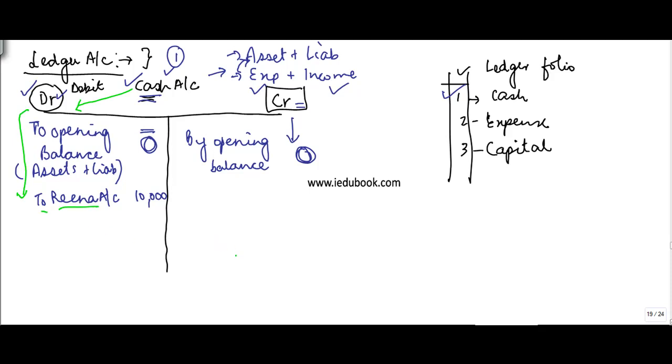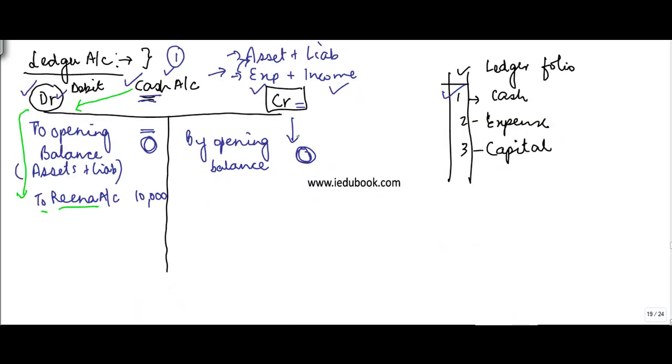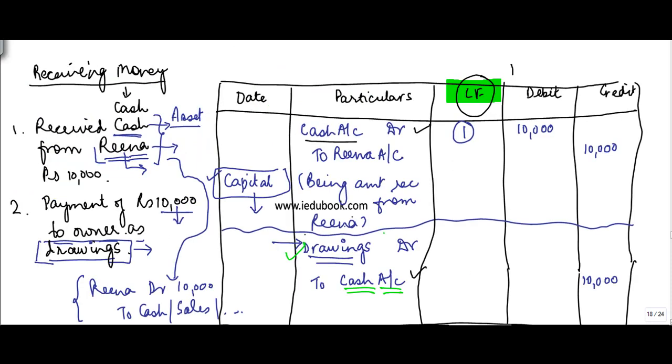If you see the second one, it says drawings account debited to cash. Cash over here is credited, so that has to come on the credit side. You say 'by' - instead of 'to' on the credit side it is 'by', on the debit side it is 'to'.